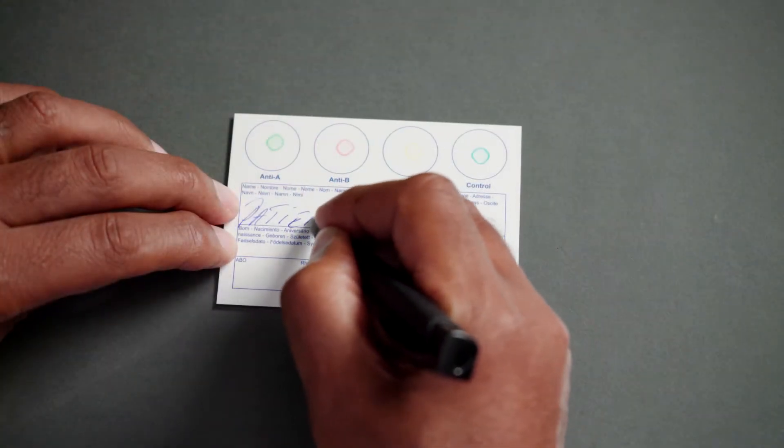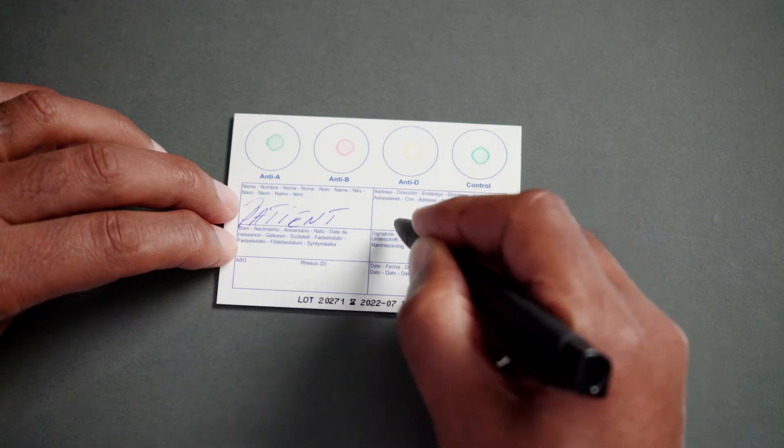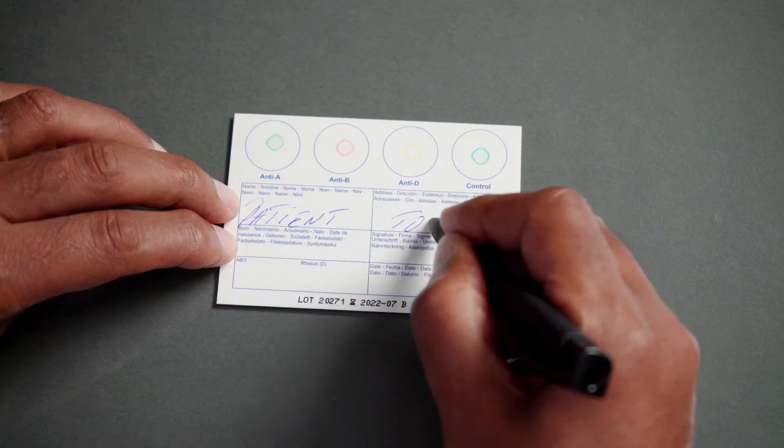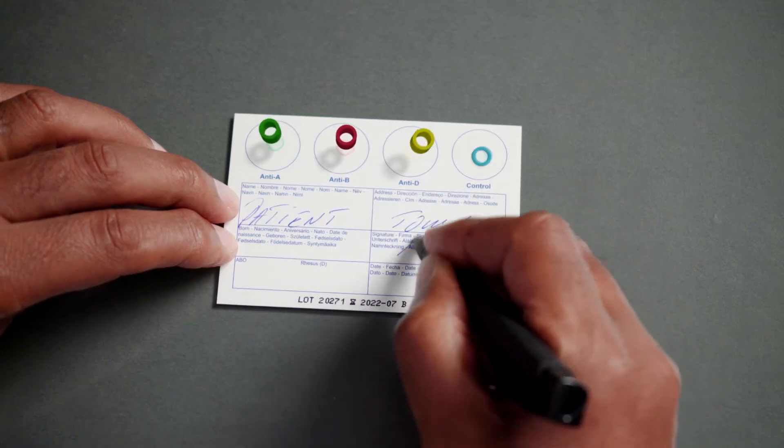Write personal data on the Elden card. Make sure all reagent spots are present as green, red, yellow and blue.